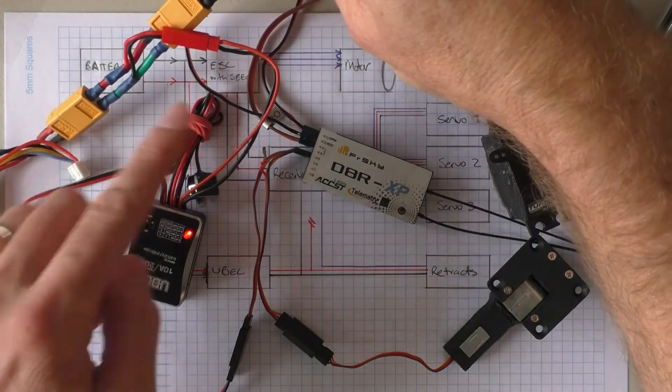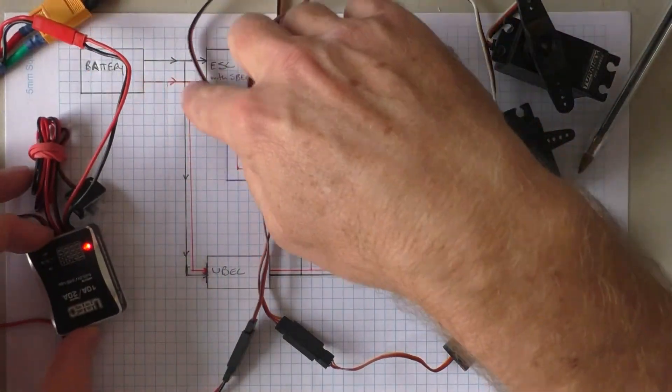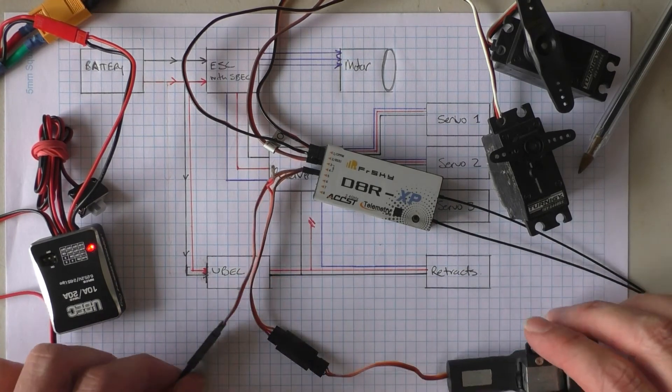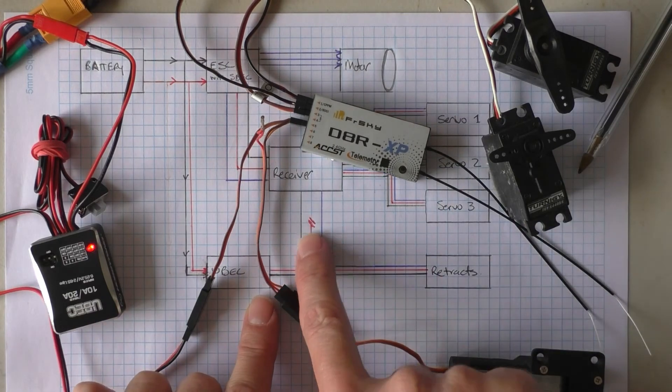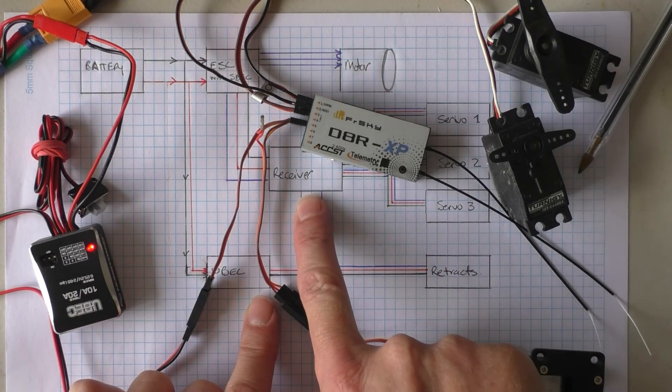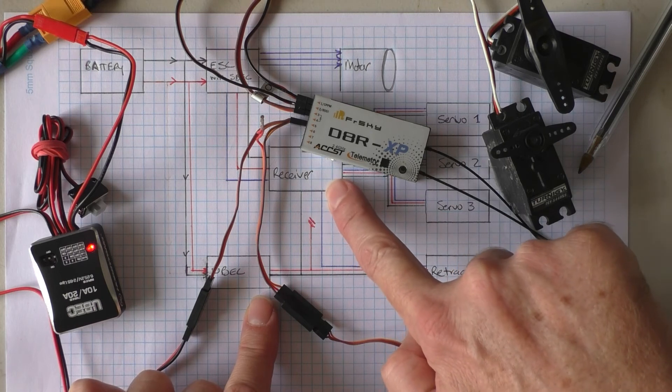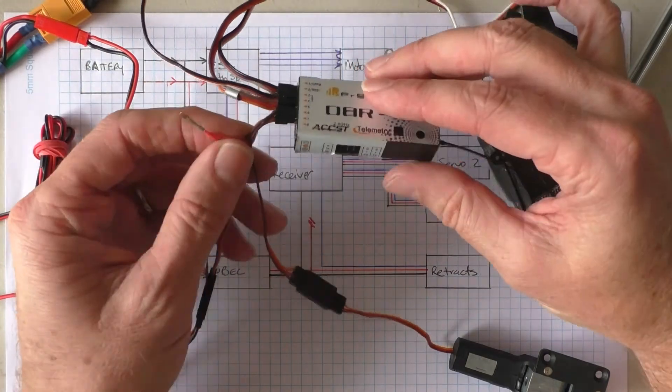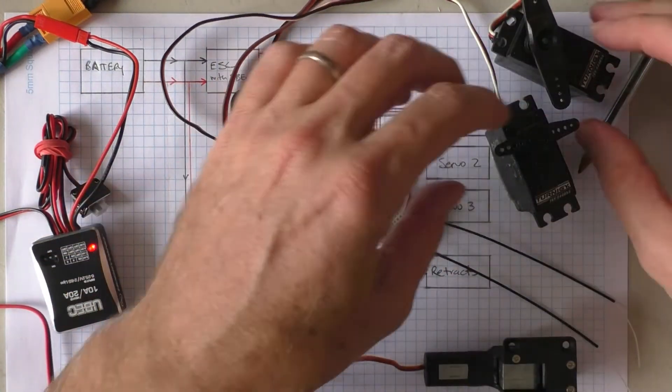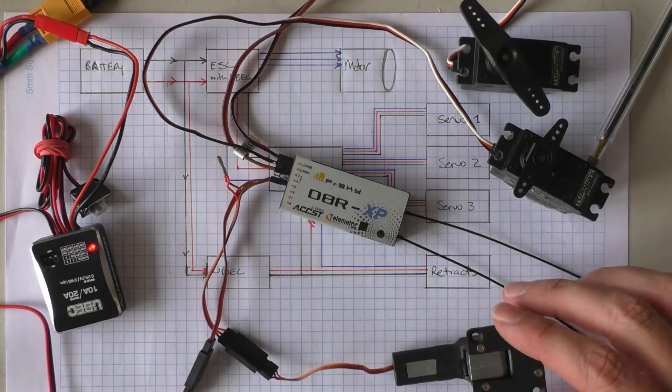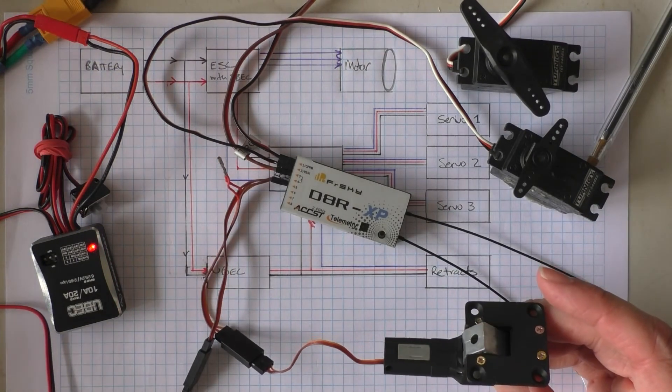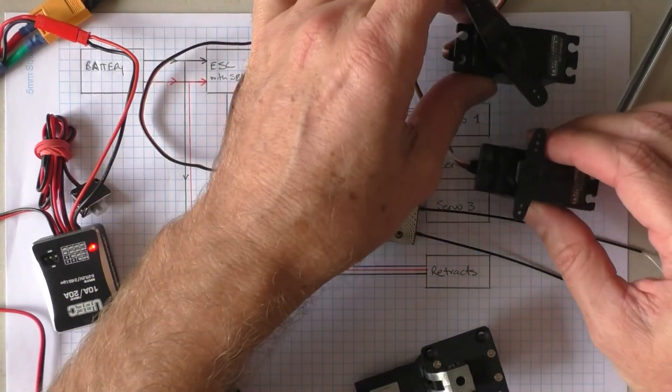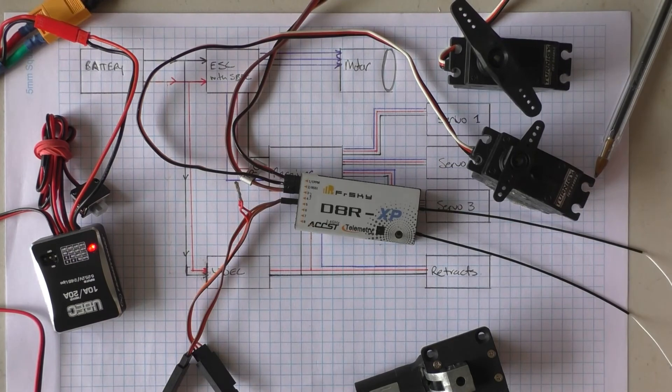There's the power being tapped off. The power comes into the UBEC. The negative and the positive goes through to the retract. You also need to have the negative or the earth return back to the receiver. The signal line comes to the receiver as normal, but we pull out that red pin. We pull out that positive. And, there we go. It's all working. So, now I can flick my retracts, knowing that the power source is not going to affect the main servos. I hope this helped.